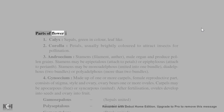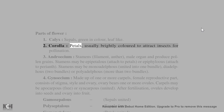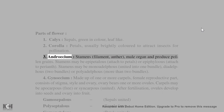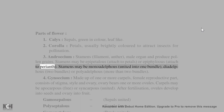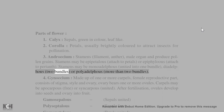Parts of the flower: (1) Calyx — sepals, green in color, leaf-like. (2) Corolla — petals, usually brightly colored to attract insects for pollination. (3) Androecium — stamens consisting of filament and anther; male organ producing pollen grains. Stamens may be epipetalous (attached to petals) or epiphyllous (attached to perianth). Stamens may be monadelphous (united into one bundle), diadelphous (two bundles), or polyadelphous (more than two bundles).